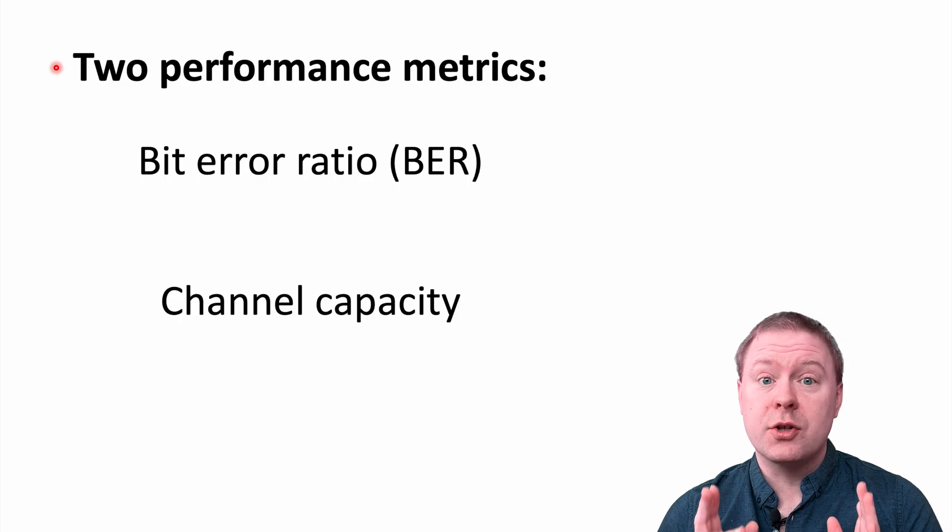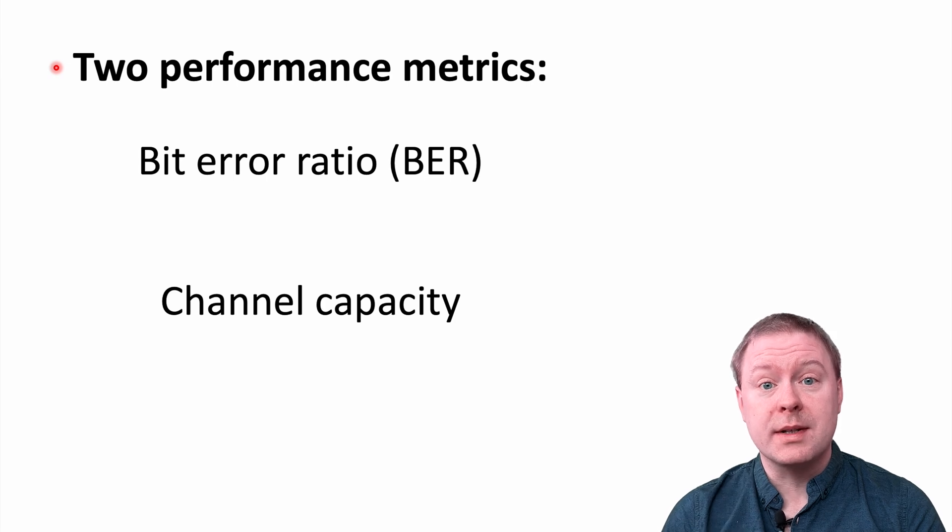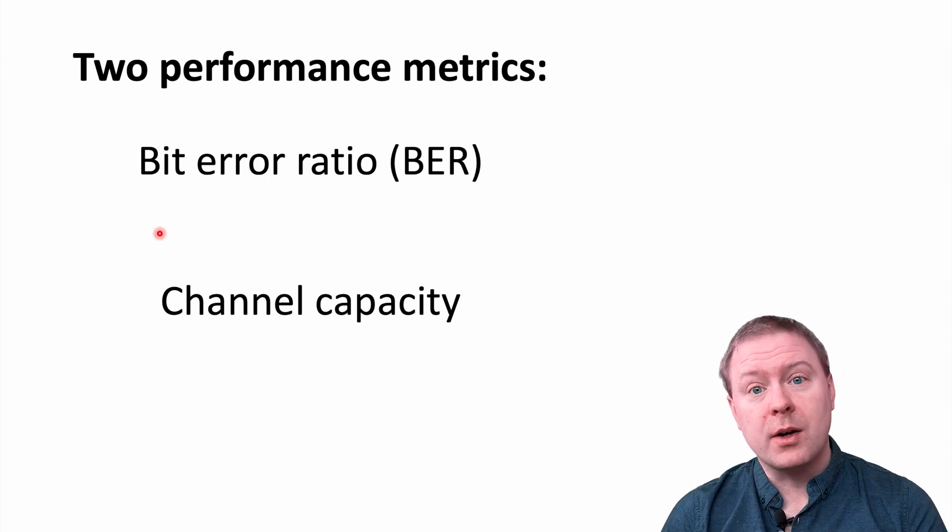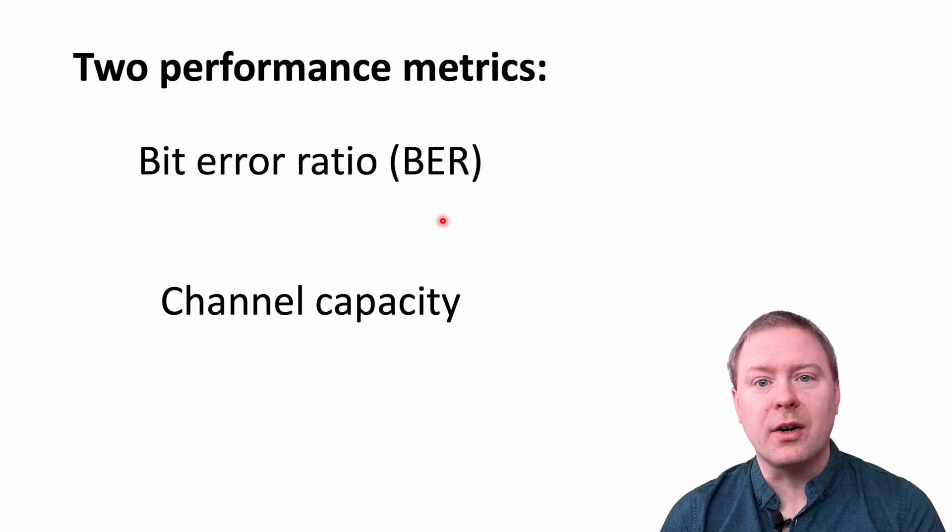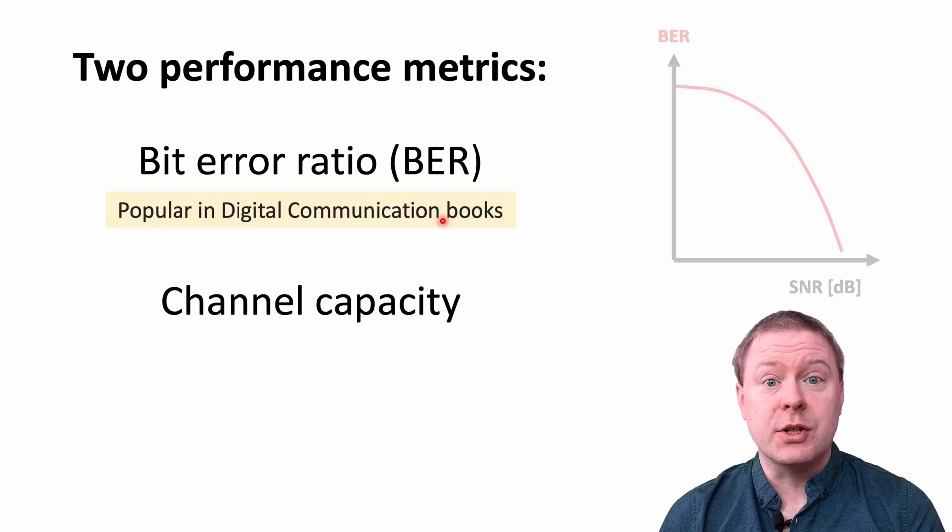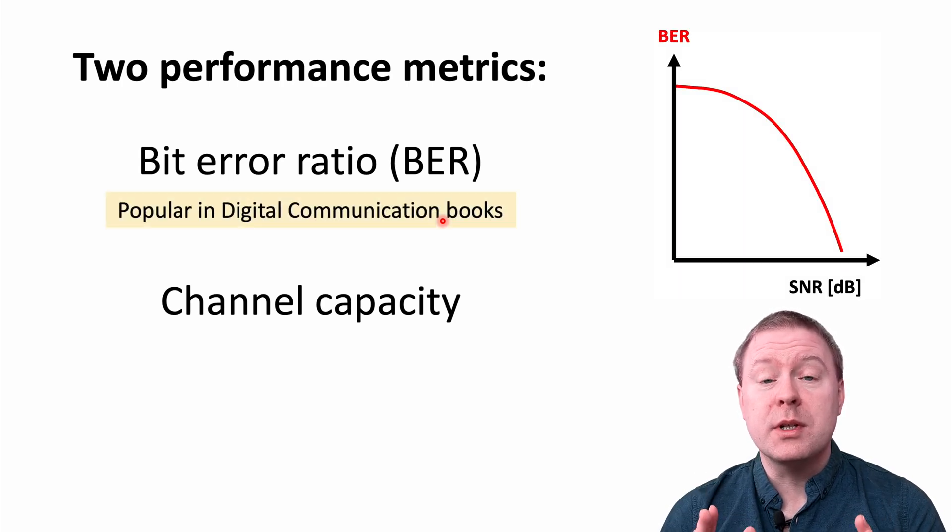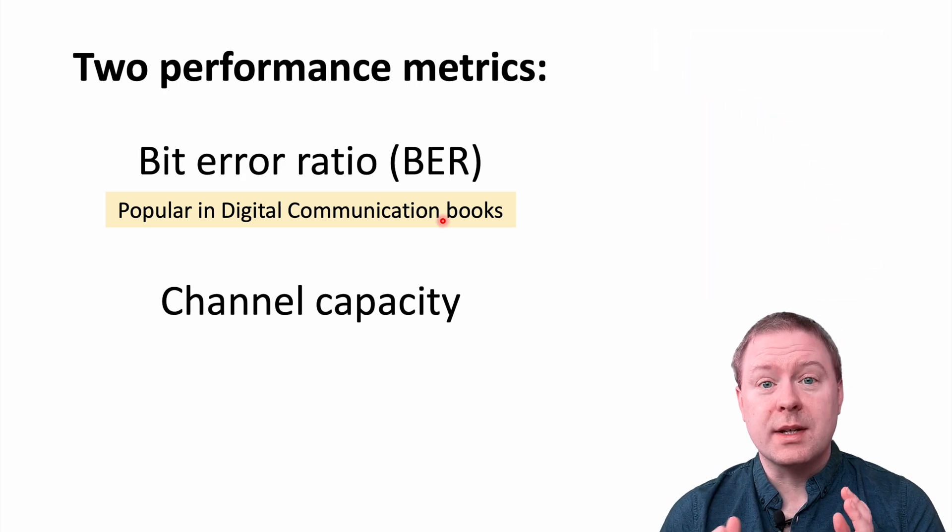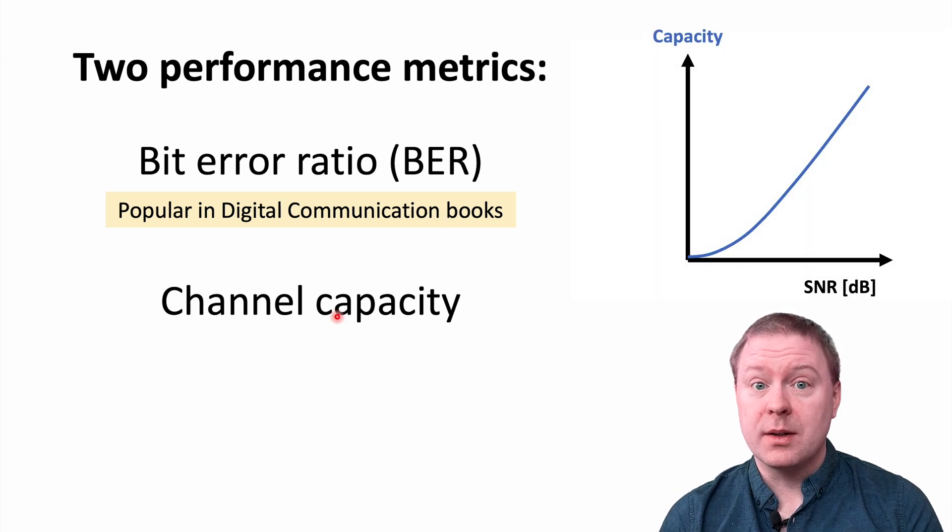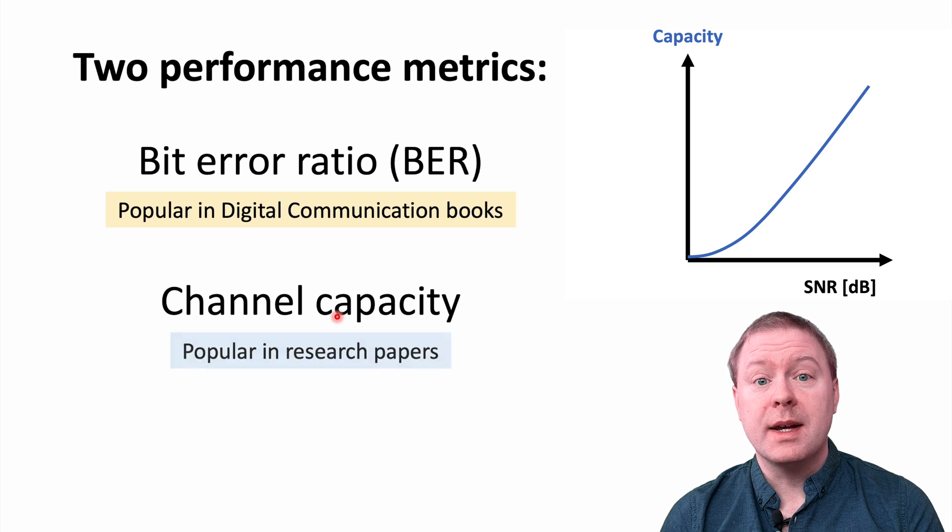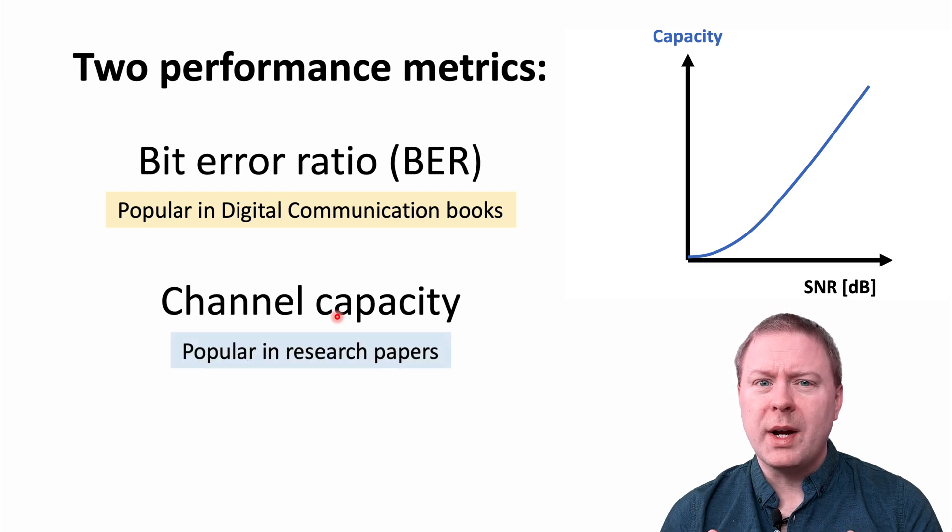The question concerns two different performance metrics. The first one is the bit error ratio, or BER. You might have come across this if you studied digital communications, where it is the most popular metric to consider. However, if you have looked into recent papers analyzing wireless communications performance, then the channel capacity, which comes from information theory, is very popular.